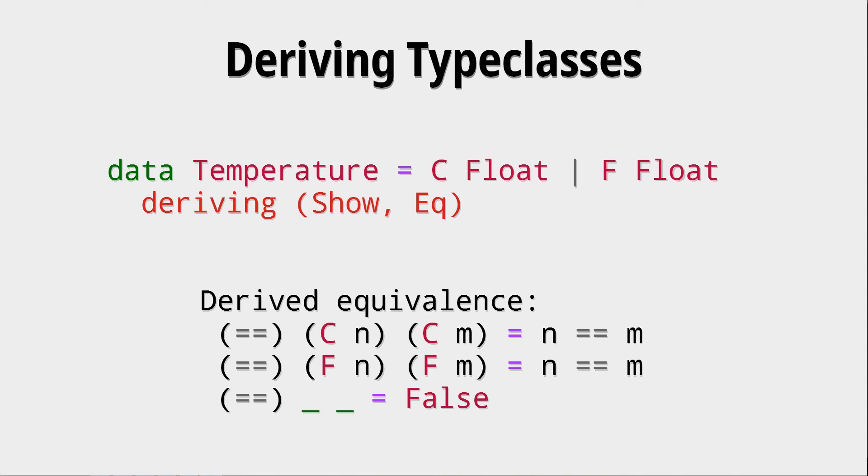But, for example, here, in the case of our temperature, this is not fine because now comparing any Celsius to any Fahrenheit will always be false. So, be careful when deriving type classes. It doesn't always make sense. You always have to think about, does it make sense to compare these two structurally? And if it doesn't, you have to write your own Eq type class.